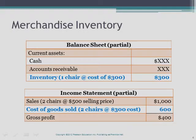The basic concept of accounting for merchandise inventory can be illustrated with an example. Suppose a furniture store has in stock three chairs that cost $300 each. The furniture store marks the chairs up by $200 and sells two of the chairs for $500 each. The furniture store's balance sheet reflects the one chair that the company still holds in inventory, and the income statement reports the cost of the two chairs sold.